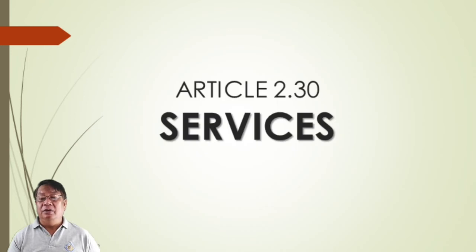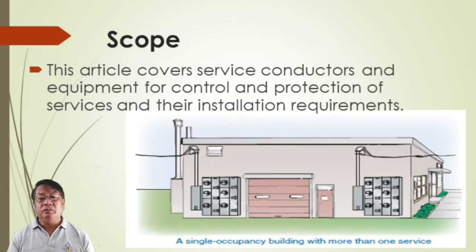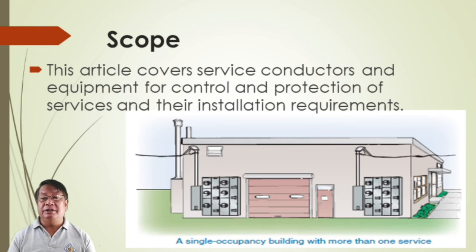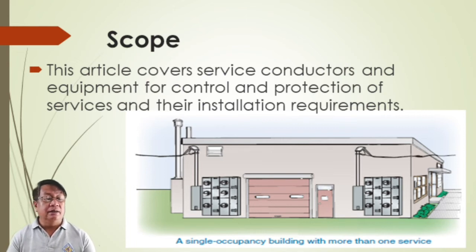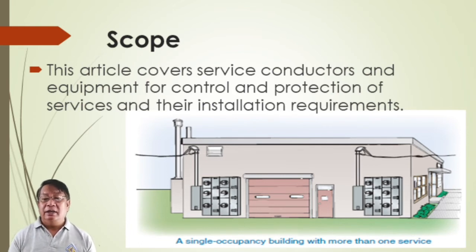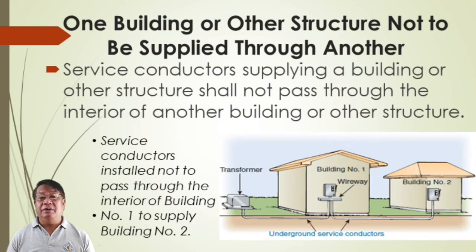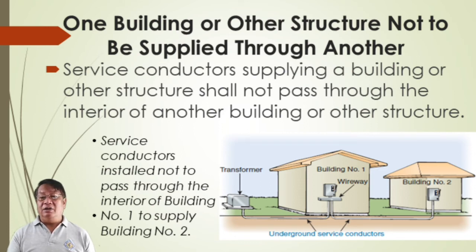Article 2.30 covers services: service conductors and equipment for control and protection of services and their installation equipment. This will guide discussions especially for distribution utilities. Service conductors supplying buildings or other structures shall not pass through the interior of other buildings or structures.